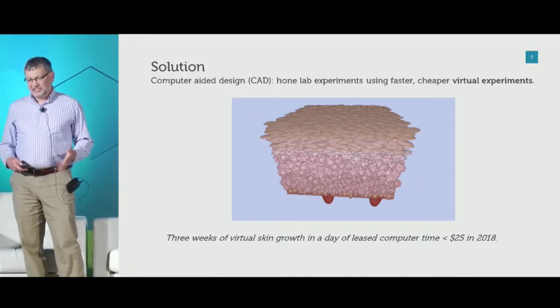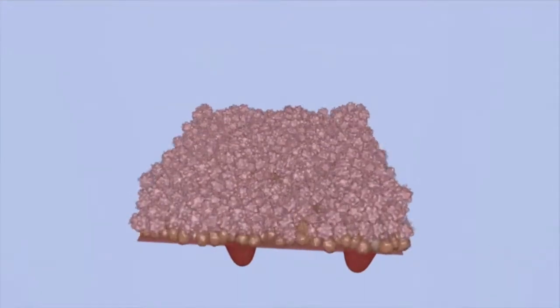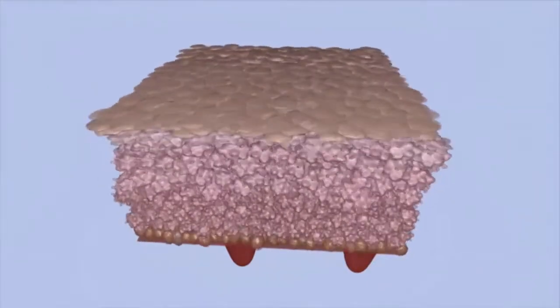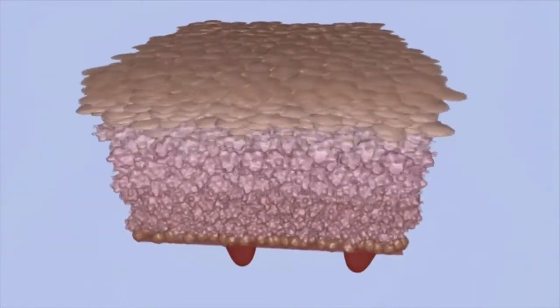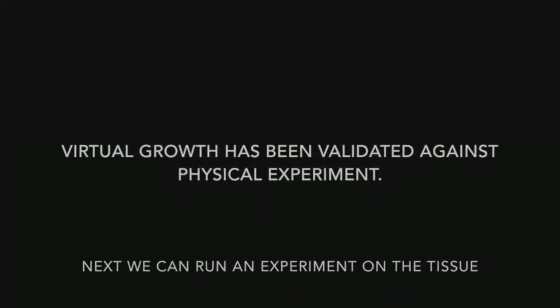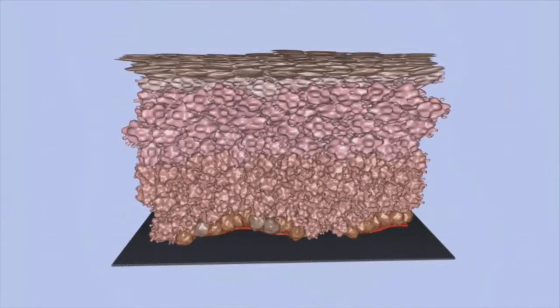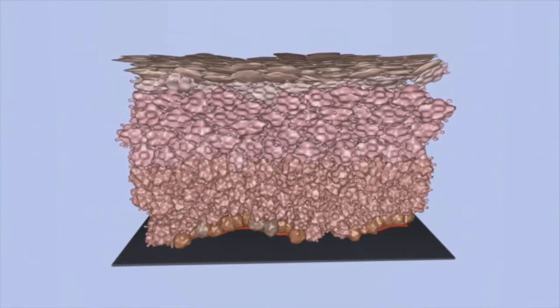Three weeks of virtual skin, and a day of computer time costs less than $25. And of course, the computing is getting cheaper and cheaper, so this is getting better and better. This is a scaffold at the bottom. There are progenitor cells becoming keratinocytes — all of the chemistry, the biology, the mechanics of the cells pushing against each other as they rise. They go from keratinocytes to corneocytes, where they flatten out, release lipids into the skin tissue, and then they die — reaching homeostasis. We validated this against physical experiments, and now we can perform experiments on that tissue. Imagine pushing your thumb down on top — we want to test the elasticity of skin. That's a measure of skin health, and you can see it bounces back.